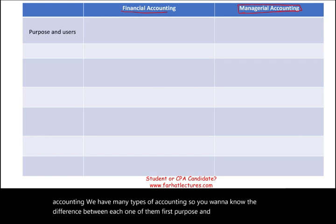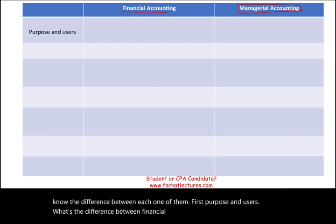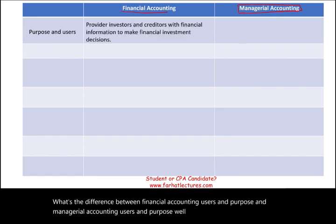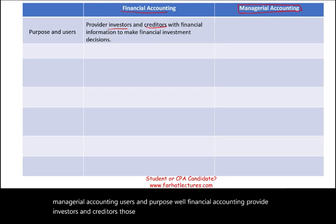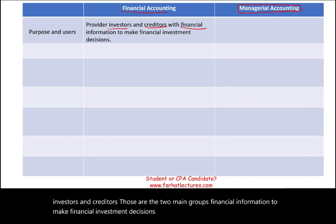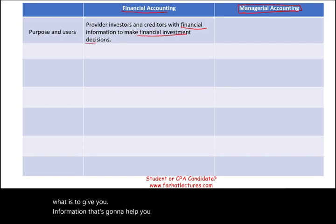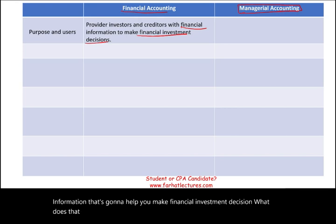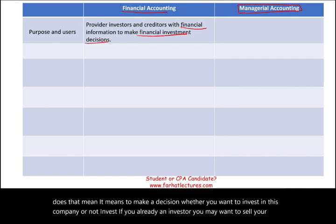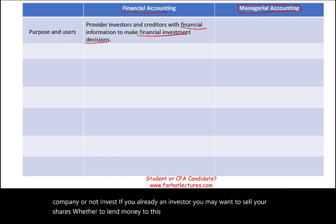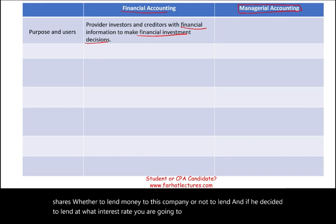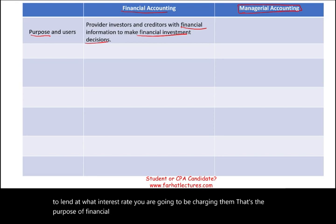First: purpose and users. Financial accounting provides investors and creditors — those are the two main groups — financial information to make financial investment decisions. The purpose is to give you information that helps you decide whether to invest in a company or not, whether to sell your shares, whether to lend money to the company, and at what interest rate. That's the purpose of financial accounting, mainly for investors and creditors, who are external to the company.